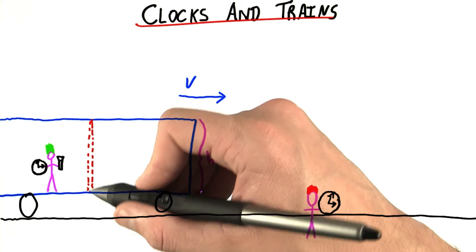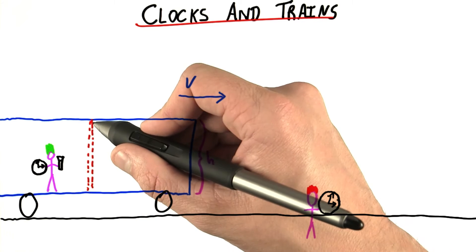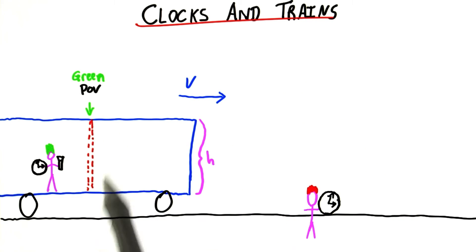this is the right drawing to draw. From green's point of view, as far as she knows the train is at rest, so it looks like the light goes straight up, then comes straight back down. So I'll do a little arrow here showing that this represents the green point of view.